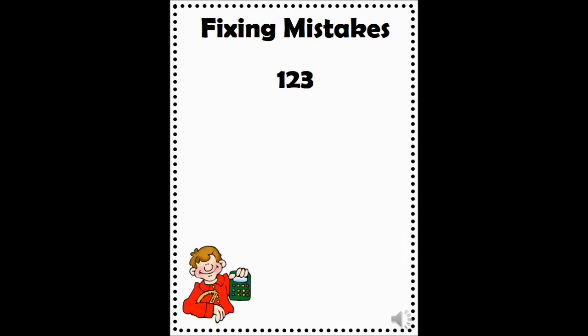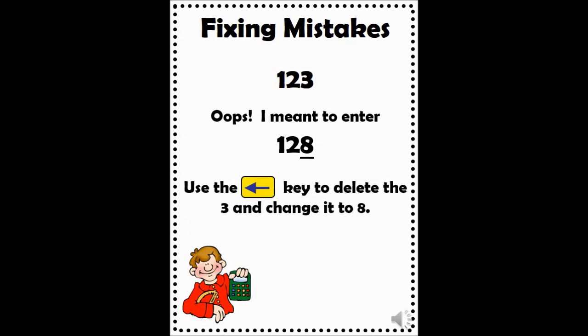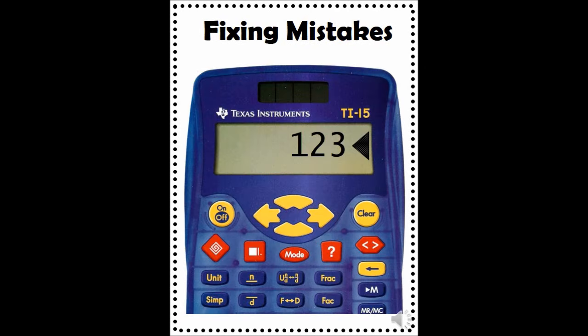The next buttons we will look at are for fixing mistakes. Start by entering the number 123. Oops, I meant to enter the number 128. Use the delete arrow key to delete the 3 and change it to an 8. As you can see here, I am pressing the delete key. The arrow in my display is deleting the 3 so I can change it to 8.